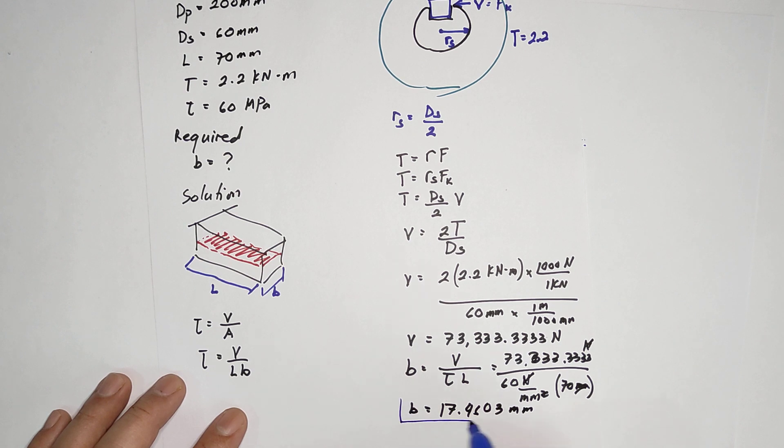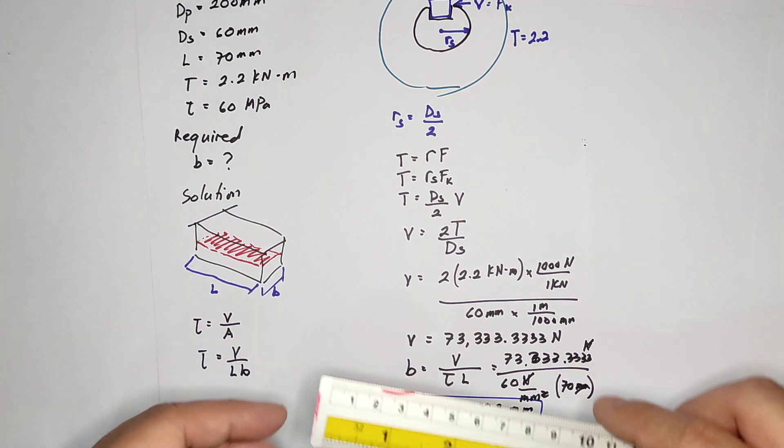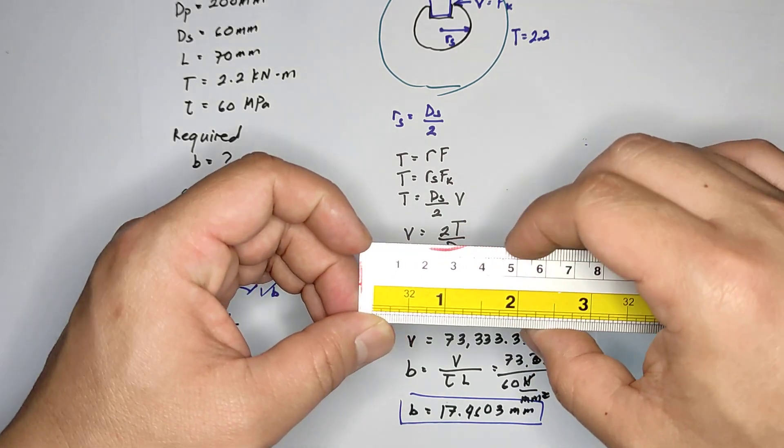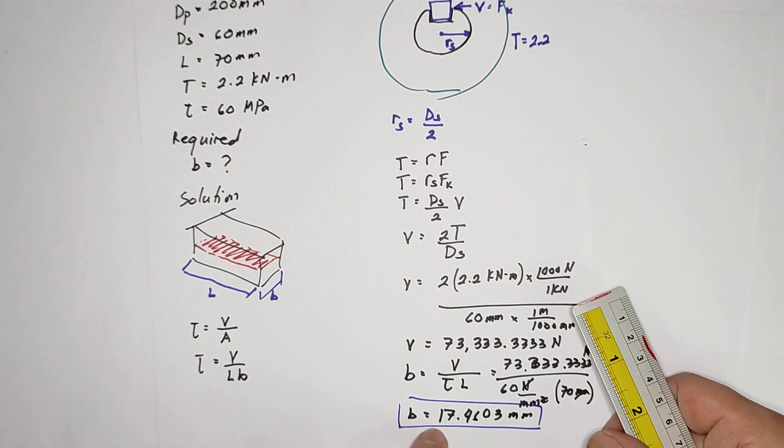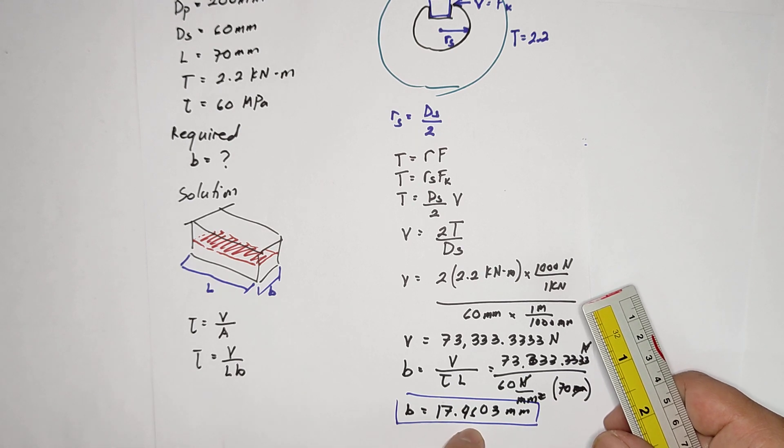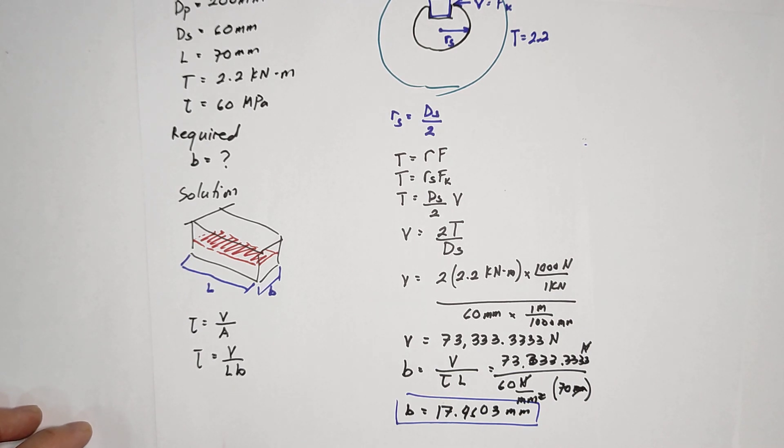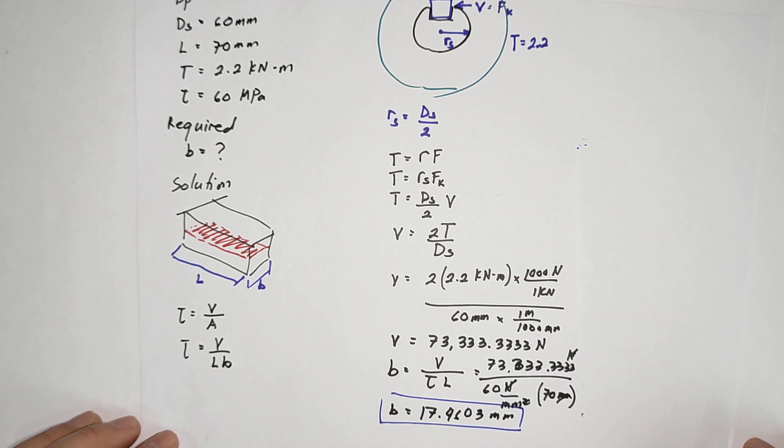So this would be the answer. The width of your key should be something like this one, and the length should be this. Now the width should not be lesser than 17.46. If it's lesser, it means it will shear or it will mapunit. And ganyan lang yan, and we will discuss a little further if you reach machine design class. So that's it now for today.